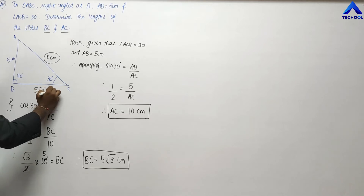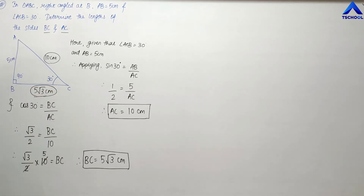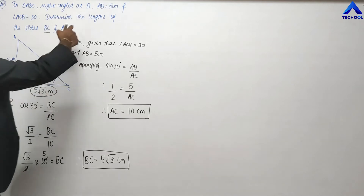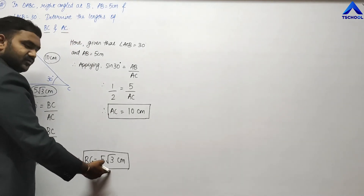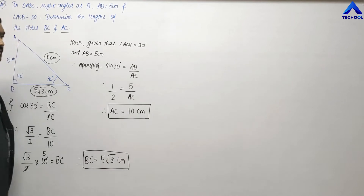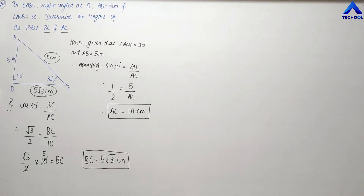So we got our second required value: BC equals 5√3 centimeter. Hence the lengths of the sides are BC = 5√3 centimeter and AC = 10 centimeter. In this way you are going to solve these sums as per the given question. Let us solve some more.